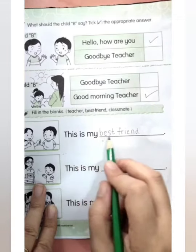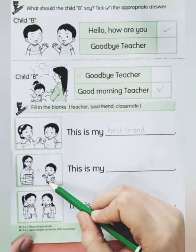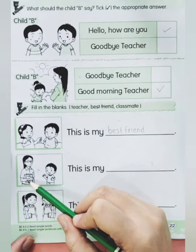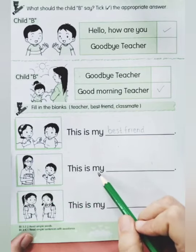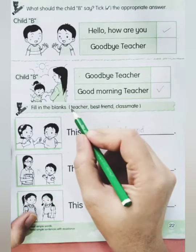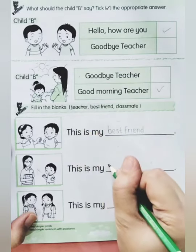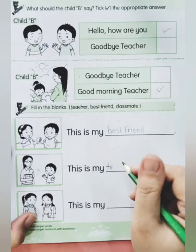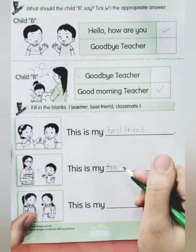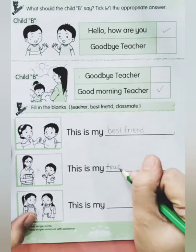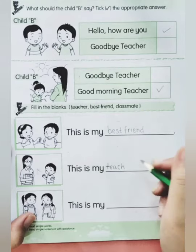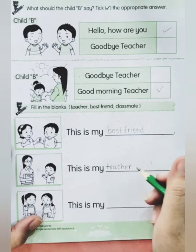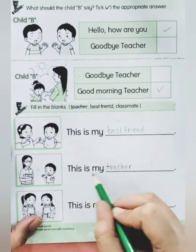This is my best friend. Now the second: who is this? Very good — this one is the teacher, so: 'This is my teacher.' Let's spell together: T-E-A-C-H-E-R, teacher. Say it together: this is my teacher.